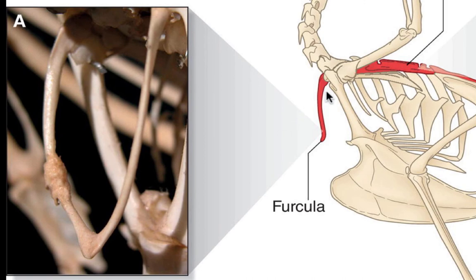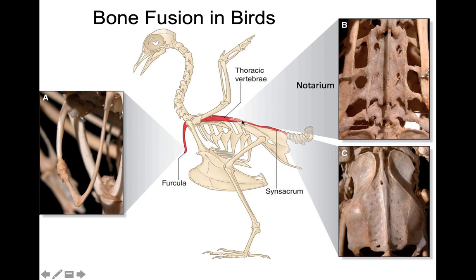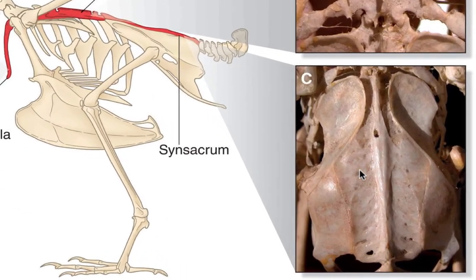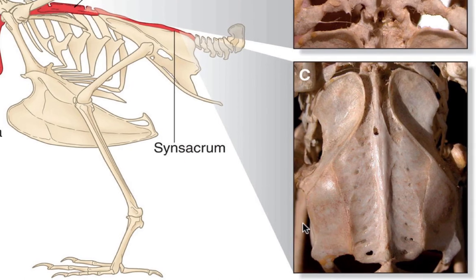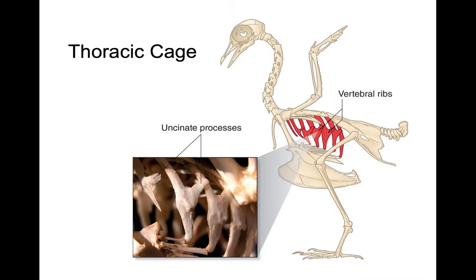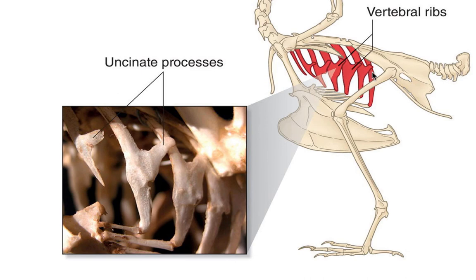Also at the front of the thoracic cavity is the furcula — basically a fusion of the clavicles. Past the thoracic vertebrae, we have the sacral vertebrae fused into a structure called the synsacrum. Looking down on the pelvic girdle, we see the synsacrum, with the ilium up here and the ischium below. When you look at the thoracic cage itself, the vertebral ribs have extensions from one rib to the other — called the uncinate processes — that allow a little bit more support for the thoracic cavity.